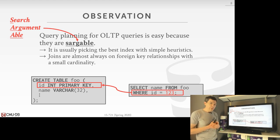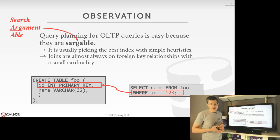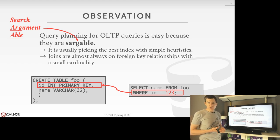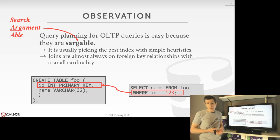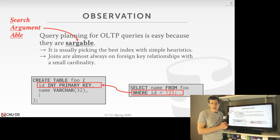MongoDB is probably the most famous database system today that still uses basic heuristics, because in the type of workload they were originally targeting, they weren't doing complex joins — they didn't even add joins until only a few years ago. So in that world, they could get by with simple heuristics.